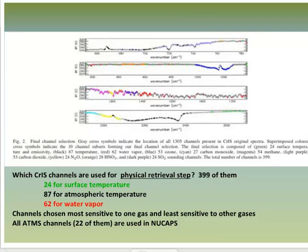NuCAPS soundings are produced using a regression and a physical retrieval. The regression step uses coefficients trained from cases that used all CrIS-ATMS data and ECMWF model output on select days in the past to find the best statistical relationship between the satellite data and the profiles of temperature and moisture. Regressions with the data use all channels, so they capture more vertical structure than the physical retrievals that use a subset of CrIS channels.